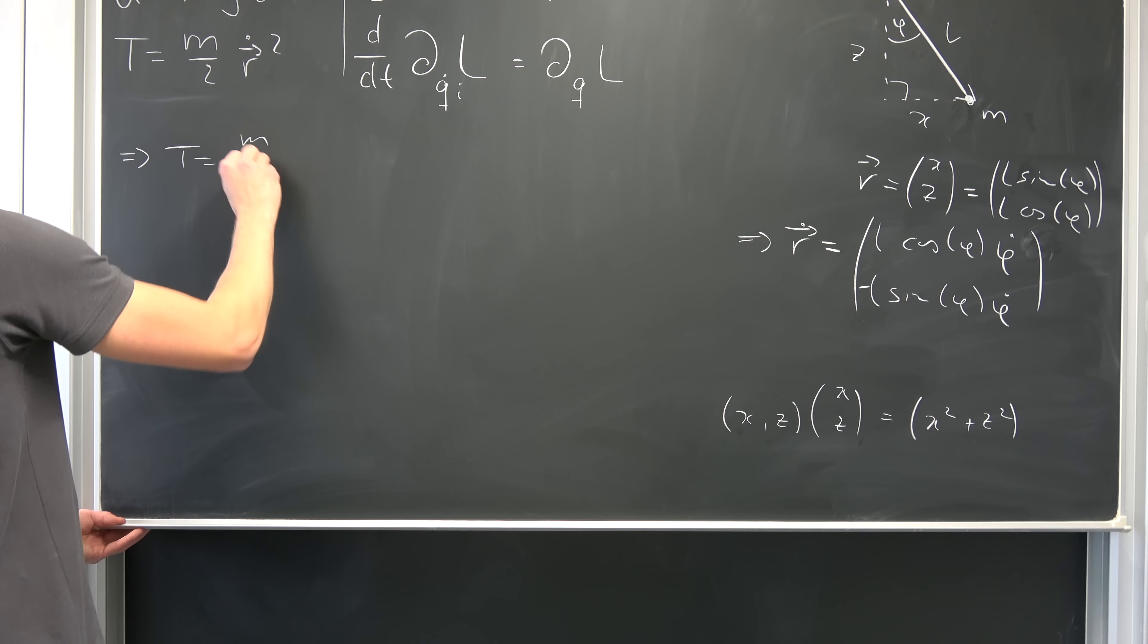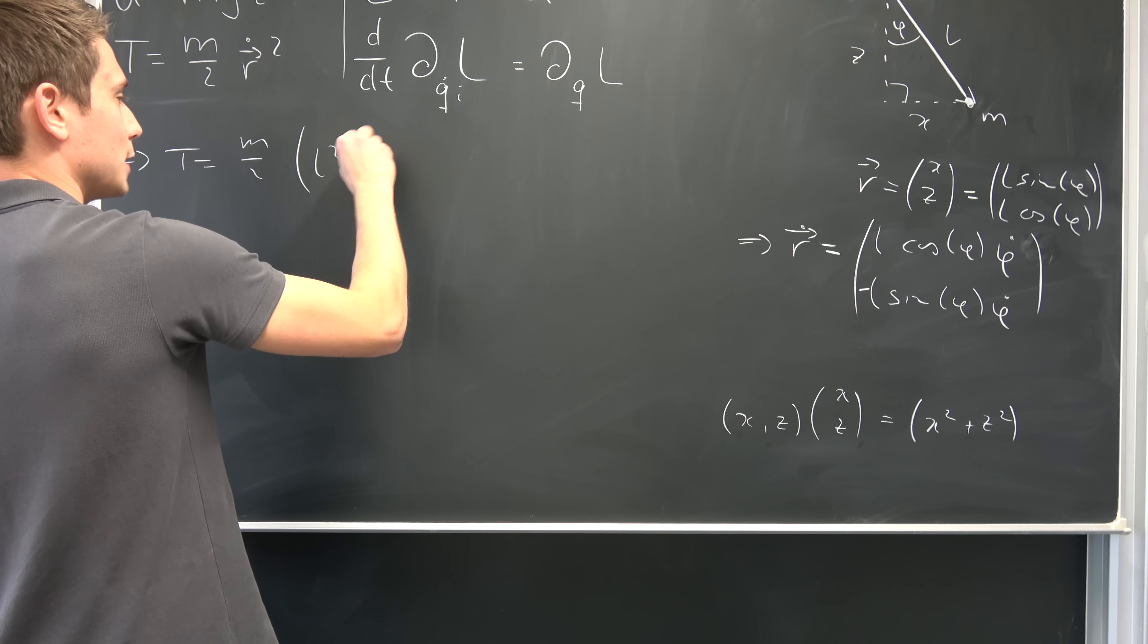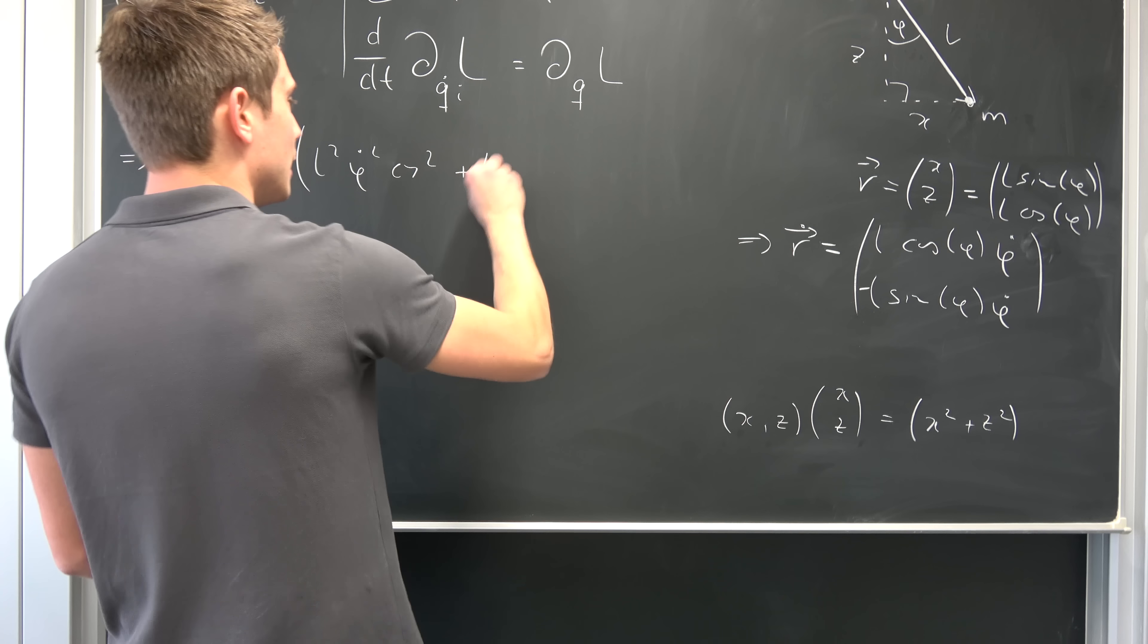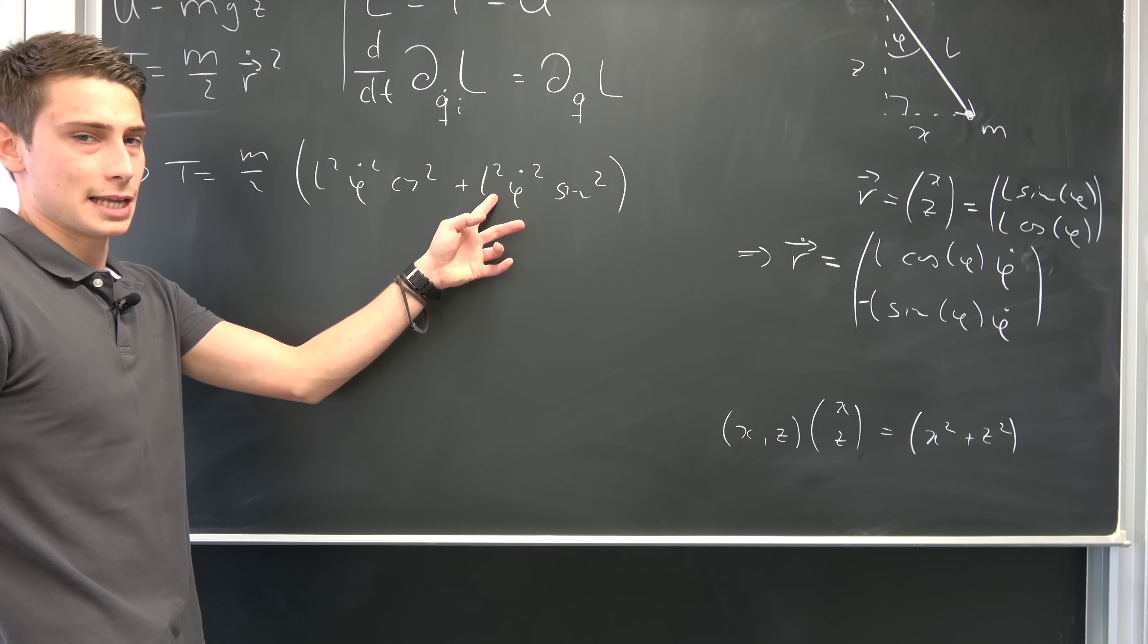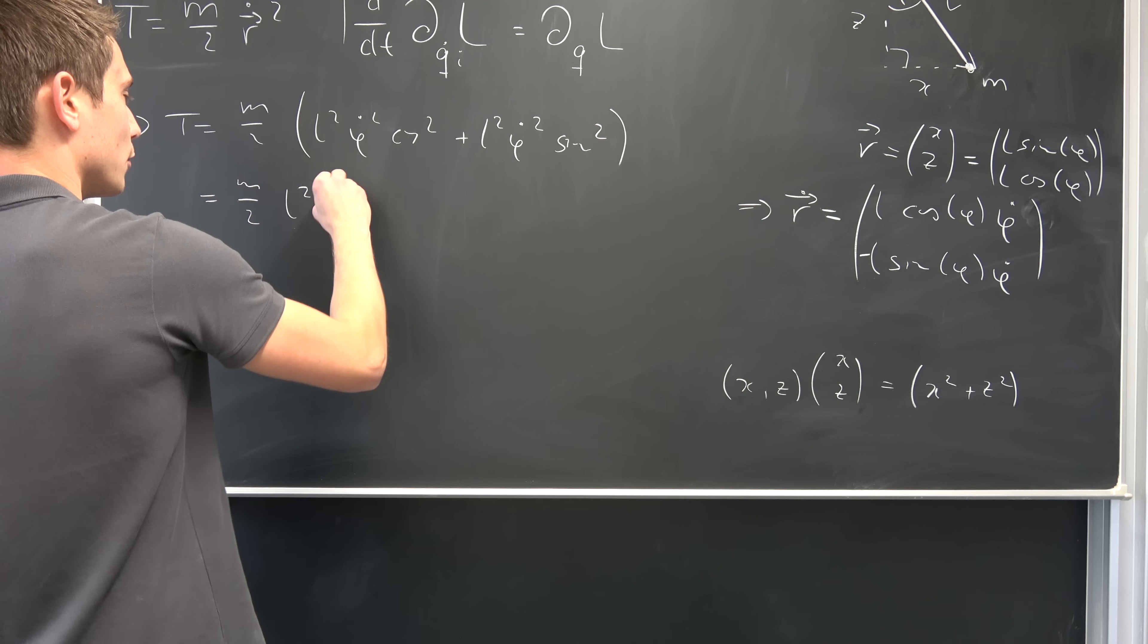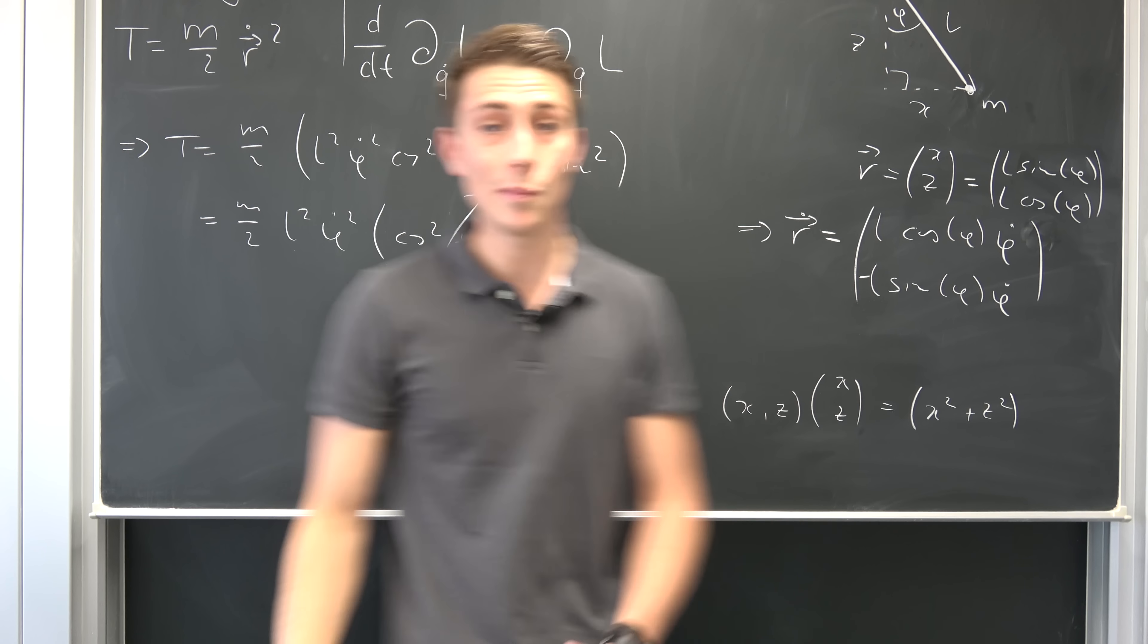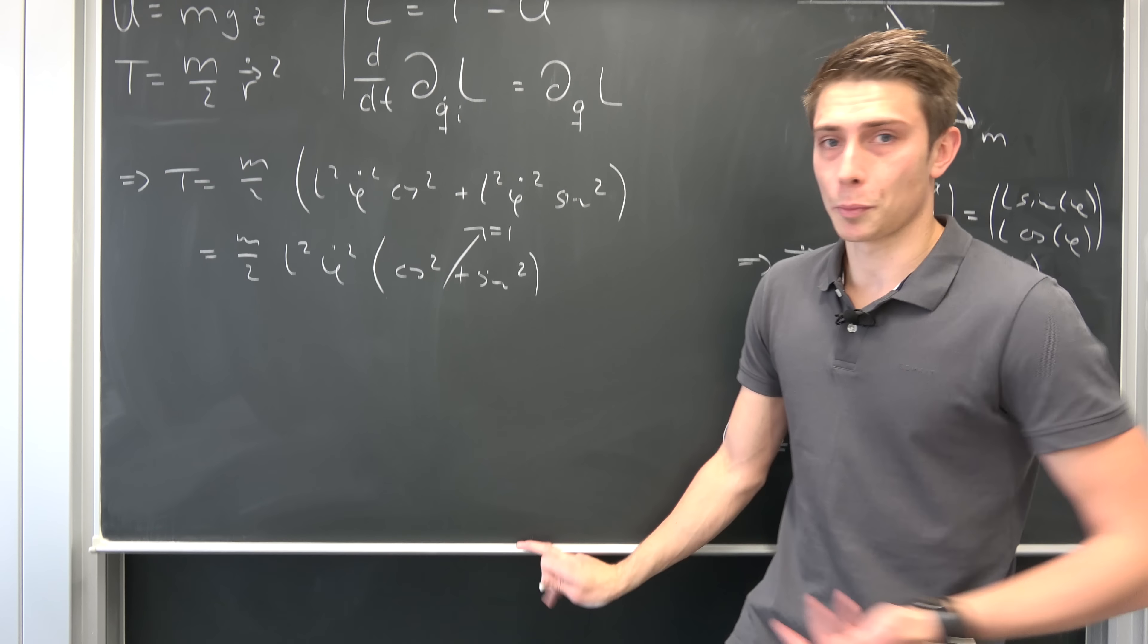That means our T is nothing but M over 2. This thing squared which is corresponding to L squared phi dot squared cosine squared of phi, I'm leaving this phi out of the way, plus because negative sign is going to cancel out, negative negative L squared phi dot squared sine squared. And you can see we can factor out this L squared and phi dot squared. So this is M over 2 L squared phi dot squared times cosine squared plus sine squared. And this right here is just one by the fundamental theorem of trigonometry.